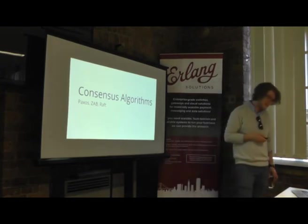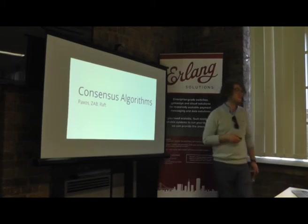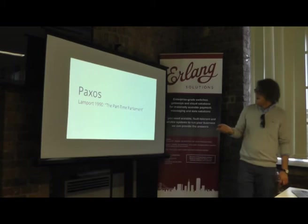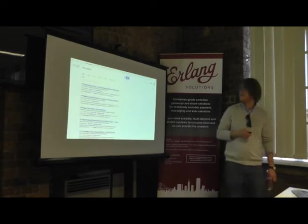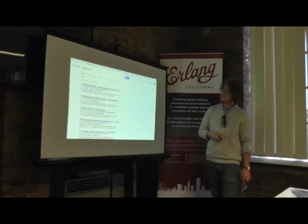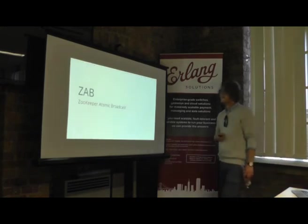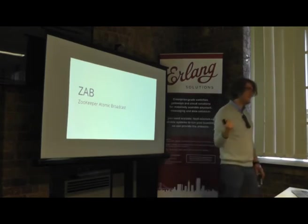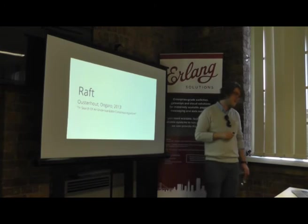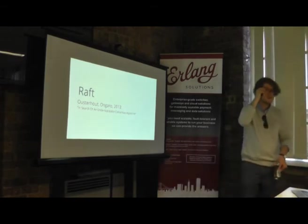There are many consensus algorithm variants. Multi-Paxos is used in Riak. There's also ZAB (Zookeeper Atomic Broadcast), invented at Yahoo when they built Zookeeper. And Raft, the newer algorithm from 2013 by Ousterhout and Ongaro at Stanford, whose main purpose was to simplify Paxos since it's notoriously difficult to implement — there are several failed Erlang implementations as well.